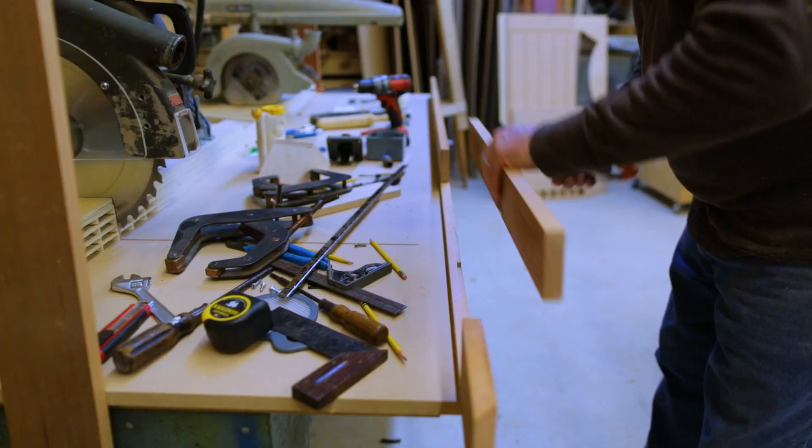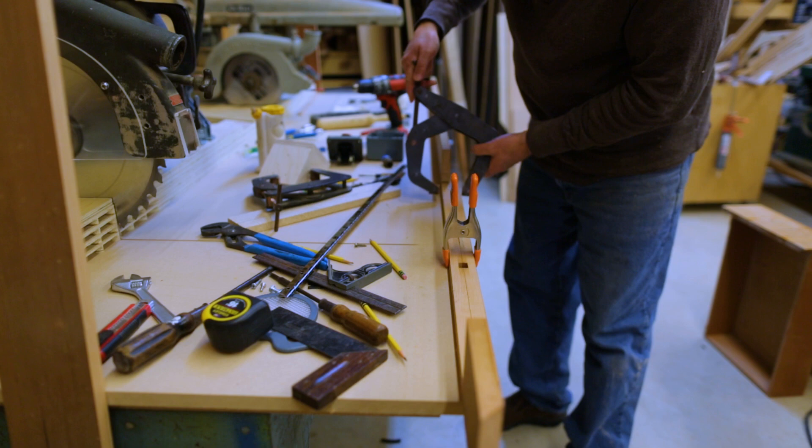And to attach the hinge, I just flipped the flap around, then centered the hinge over the seam and put in all the screws.